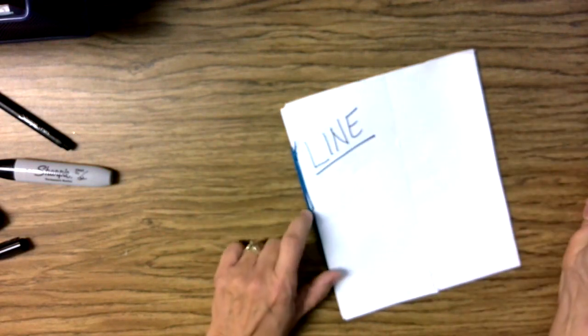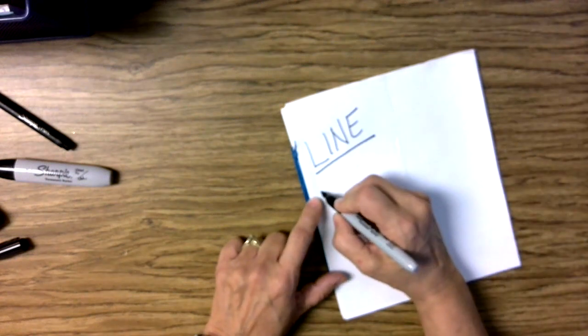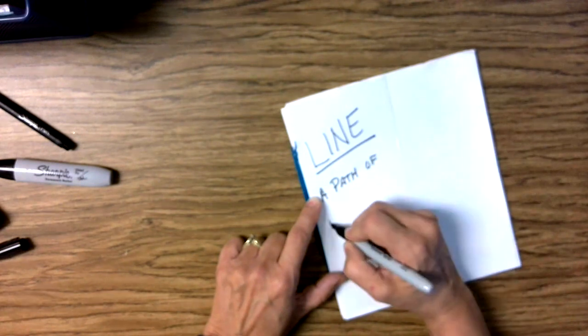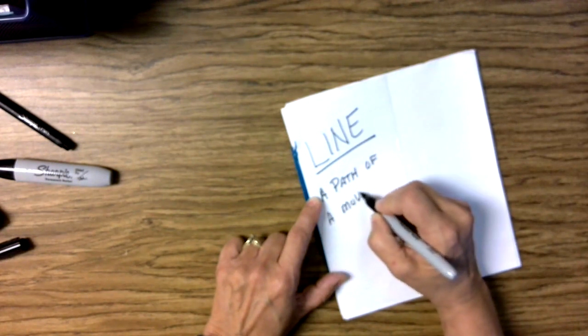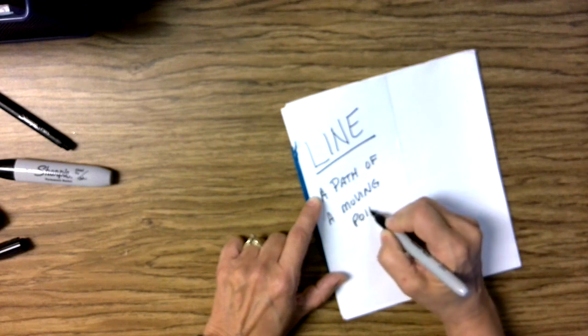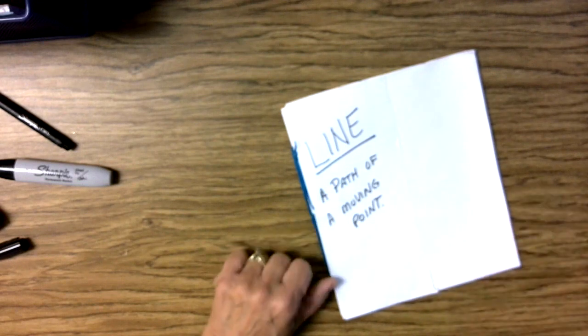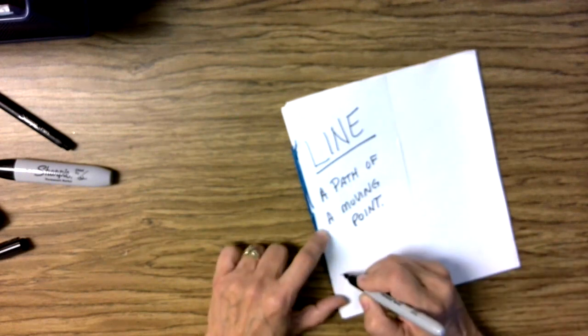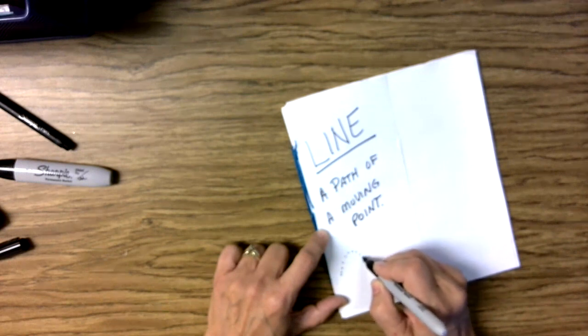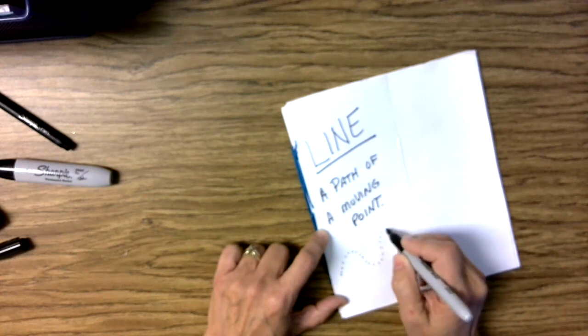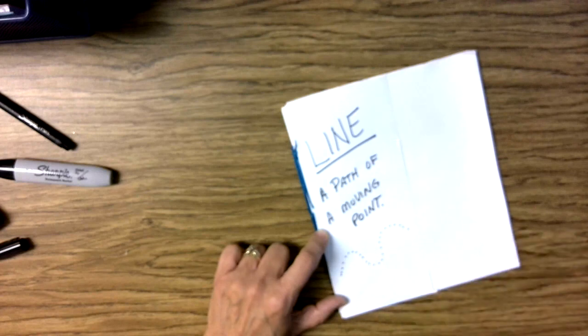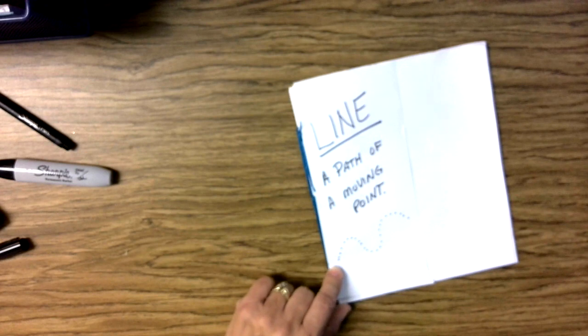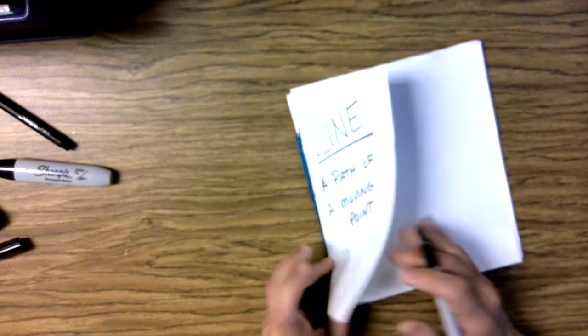We define line as a path of a moving point. So when you think about it, here's a dot, but if we put a series of them, there's a path of a moving point. And that actually looks like a line. We refer to it as a dotted line.